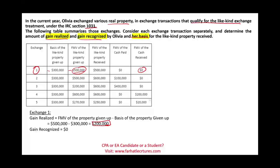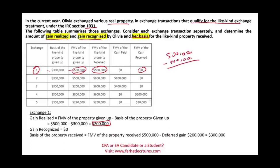So what do we do with this $200,000? We defer it. Therefore, to find the basis, we take the fair market value of the asset given to us. Since it's a gain, we deduct the deferred gain. Therefore, the basis is $300,000. We deduct the deferred gain to reduce our basis, so that in the future we have more gains — or fewer losses — when we sell.